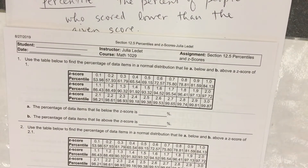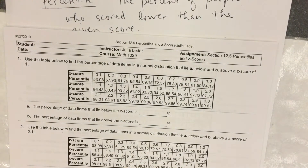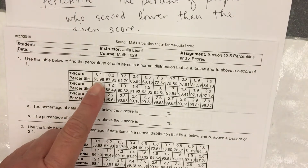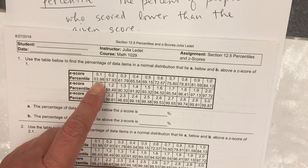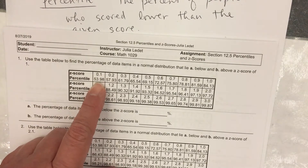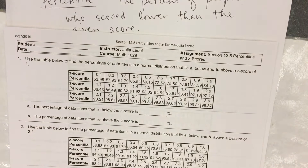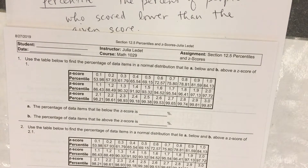Here's problem number one that gives us a percentile table. This is for a normal distribution. The percentiles are given like this. A z-score of 0.1 has a percentile of 53.98 — meaning the percent of people who scored lower than that is 53.98%. You will be given these tables; they'll pop up on each question where you need it.